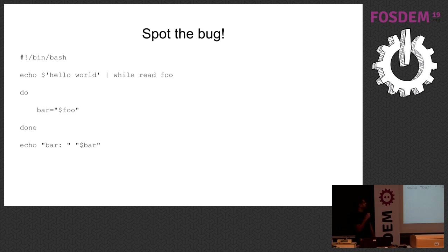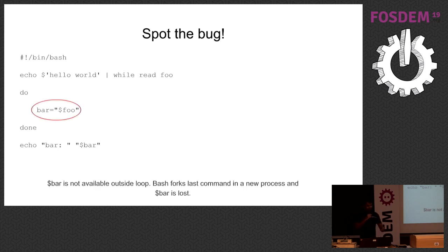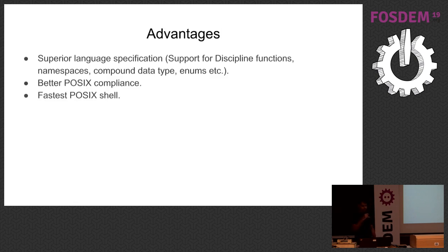Let's have another quiz. This is a valid bash script, and there's a bug in this script. The bug lies inside this assignment — bash will fork the last command in a separate process, and this variable will be lost. Why am I showing you this? Because if you run the exact same script in KSH, it will work as expected. It turns out that even though Korn Shell is slightly older than other shells, it still has a better language specification.